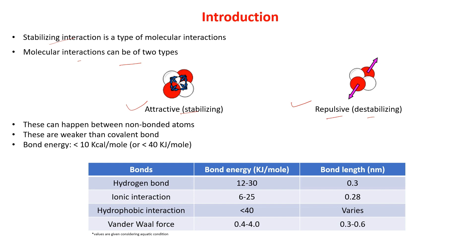These forces happen mostly between non-bonded atoms. As we already studied in previous videos, two atoms are bonded due to either covalent bond or ionic bond. Ionic bond is formed due to transfer of electrons and covalent bond is formed due to sharing of electrons. These two bonds — covalent and ionic — are responsible for bonding two atoms. Covalent bond is the predominant bond in a biological system.